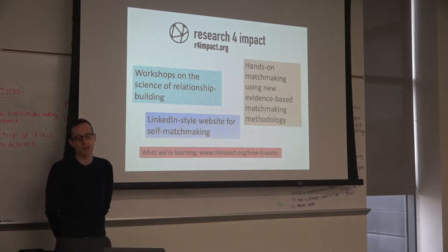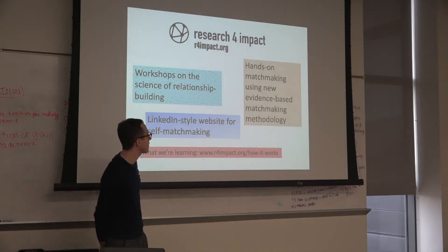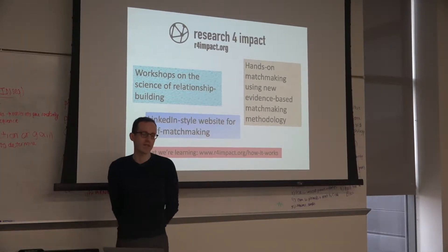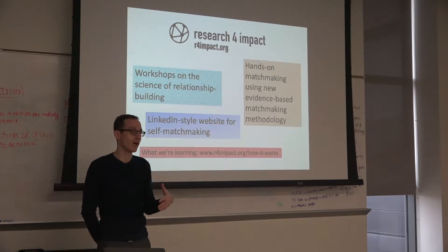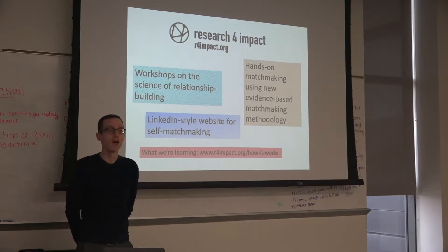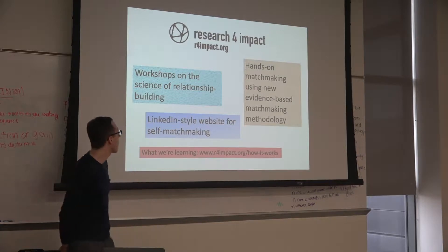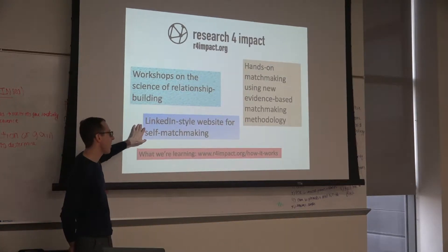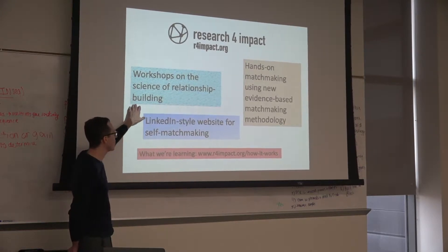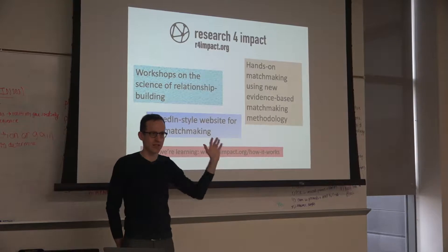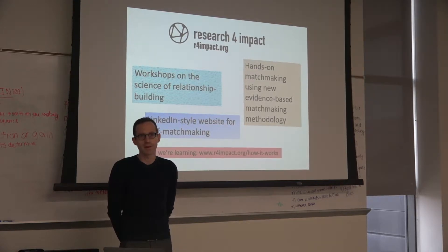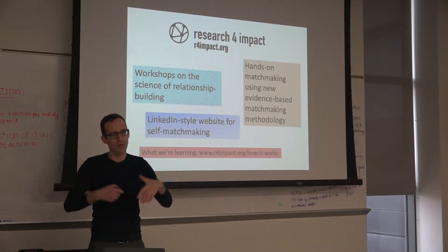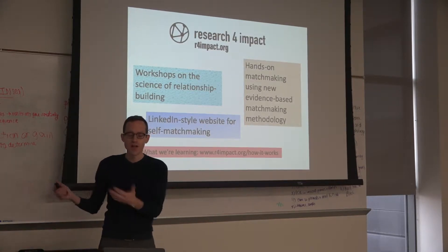Research for Impact does a few different things. Broadly speaking, we're trying to build bridges between research and practice. The main thing we do is hands-on matchmaking using an evidence-based matchmaking methodology — that evidence base comes in part from work I'll mention today about how you build relationships between people with diverse forms of expertise. We also have a LinkedIn-style website for self-matchmaking, and since 2019 I've been leading workshops on the science of relationship building across four continents.